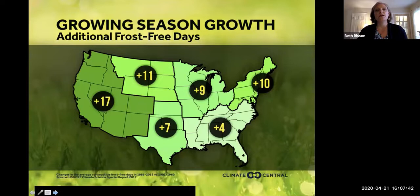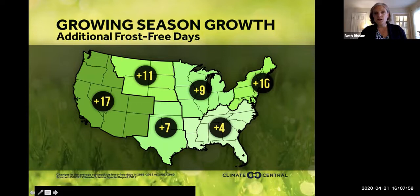When it comes to the growing season, those of you who are gardeners will have noticed that we have an increasing number of frost-free days. We particularly notice those this time of year but also in the fall. In Maine, on average, we have 10 additional frost-free days for the period between 1986 and 2015, as compared to the period between 1901 and 1960. That's about a week and a half of change.